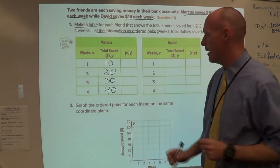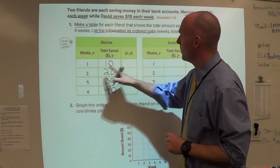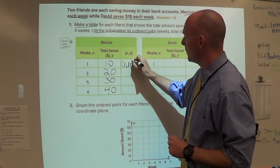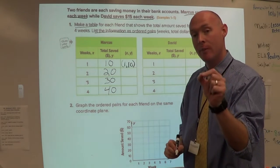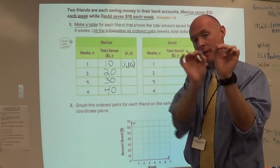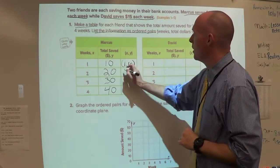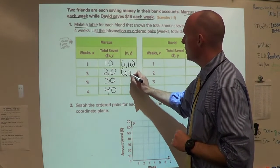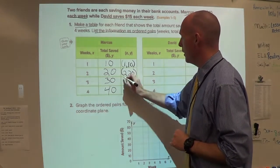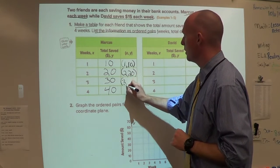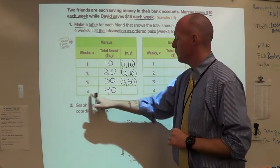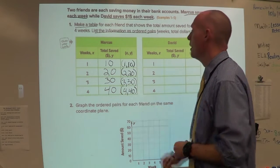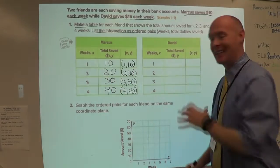So we've made the table. Now we have to list them as ordered pairs. Remember parentheses, x and then y: one comma 10. Always separate with the comma. Remember parentheses, number, comma, number: (2,20), (3,30), and (4,40). So Marcus's chart is done. Let's look at David.